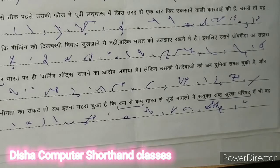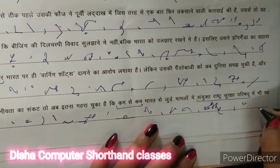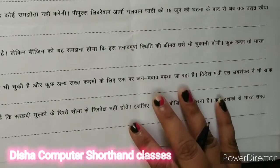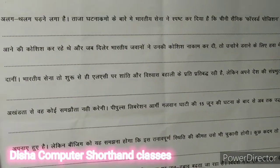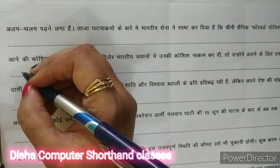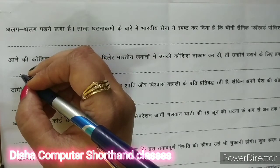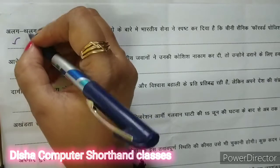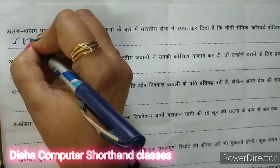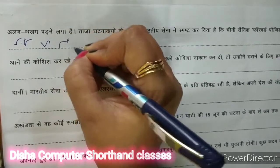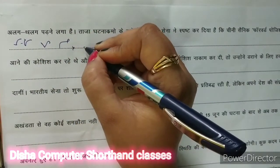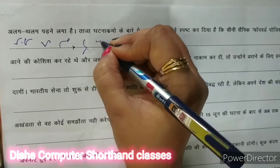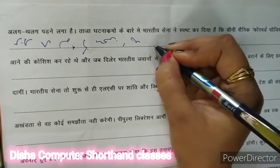लेकिन जब आप इसको एक-दो बार प्रैक्टिस में ले लेंगे, तो आपका hand movement खुद-ब-खुद हो जाएगा, आपको उसके लिए confusion नहीं होगा। तो परिषद में भी वह — शब्द है — अलग-थलग। तो हम लिखेंगे यहाँ पर अलग और थलग — तो थलग — पढ़ने लगा है — ताजा घटना क्रमों के बारे में।